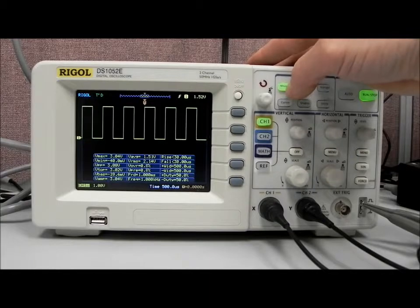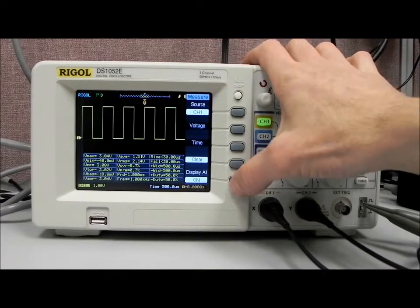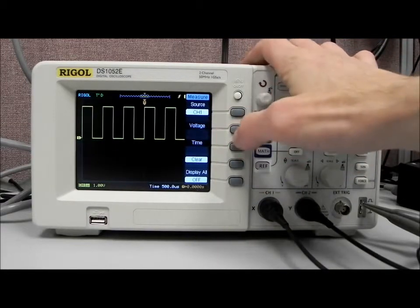What I'd like to do now though is show you how to key in on a single type. Hit measurement again, and we'll hit display off, so all of those go away.